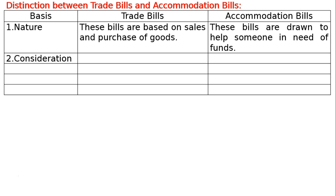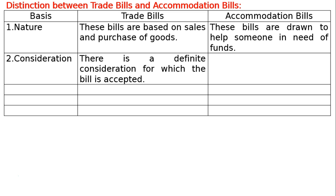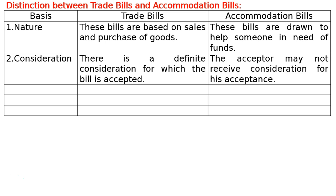Second Basis is Consideration. In case of trade bills, there is a definite consideration for which the bill is accepted. In case of accommodation bills, the acceptor may not receive consideration for his acceptance.